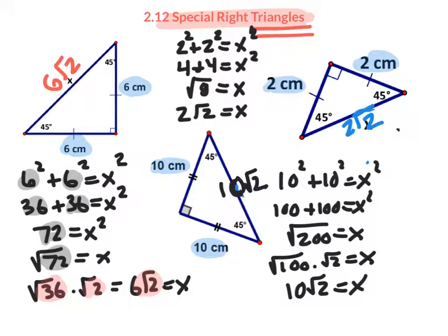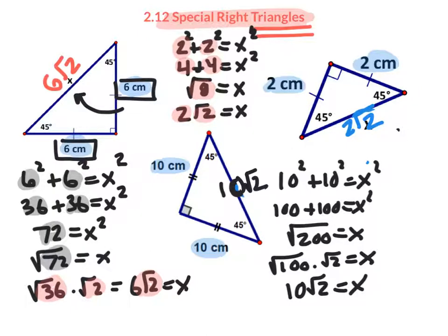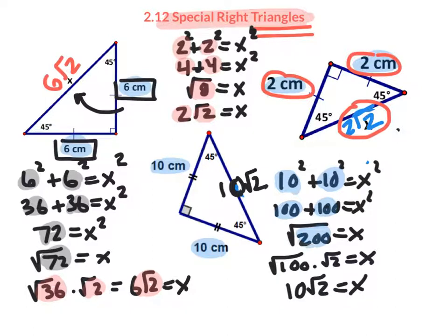We had a side of 6, a side of 6, and the hypotenuse was 6√2. For sides of 2: 2² + 2² = 4 + 4, giving √8, which simplifies to 2√2. Do you see the pattern? 2, 2, and 2√2. Continuing: 10² + 10² = 100 + 100 = √200, and out comes 10√2.